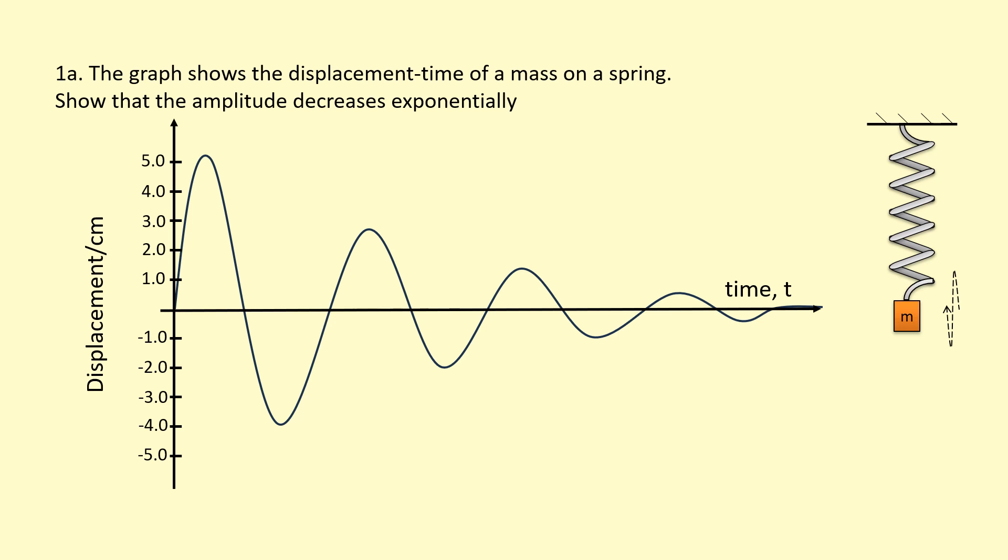Exponential decay is a special type of decrease, and we can check for it by looking at the amplitude and how that's decreasing with time. Over one oscillation, which is one increment of time, you can see here it's going from 5.2 to 2.5, so the factor of decrease there is times 0.48.